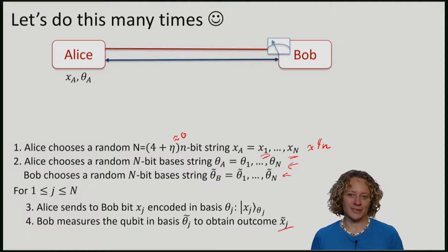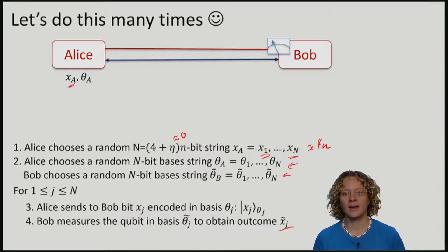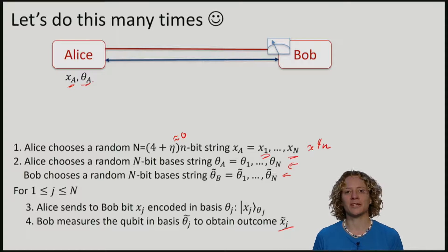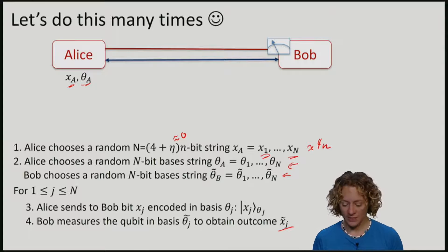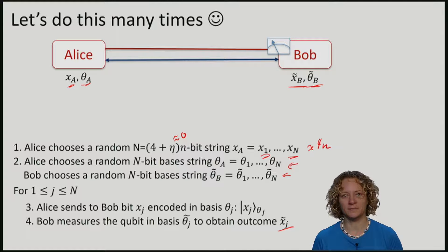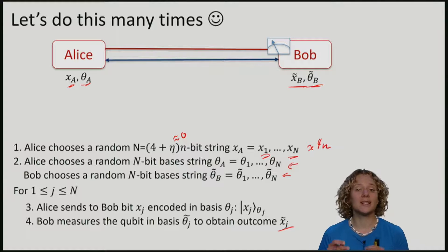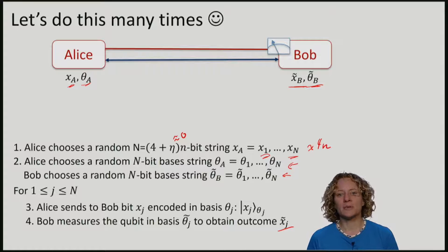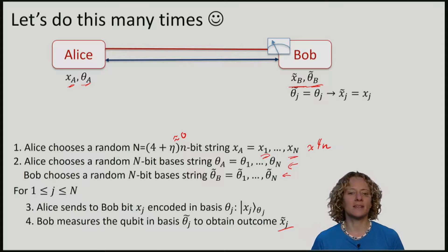What is the end result of this? At the end, Alice has a string x and a basis string theta, which says which bit was measured in which basis. Bob also has a string x tilde, namely the string corresponding to his measurement outcomes. He also remembers which bases he measured in, so he has a string theta tilde. Now by our little observation, we know that if they measured in the same bases, then the bits agree.